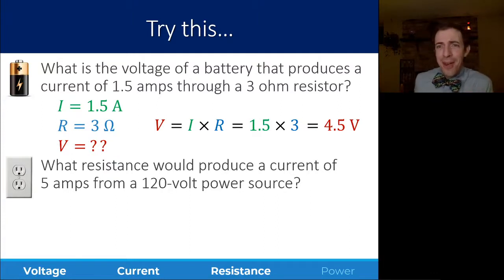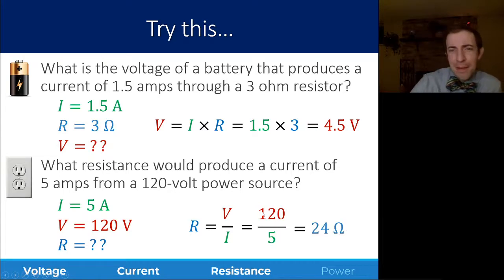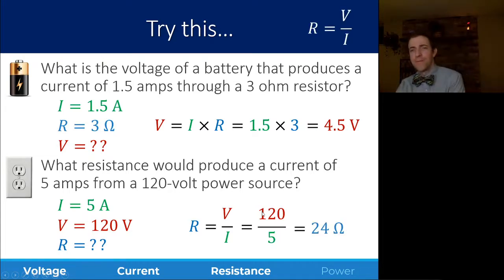With that in mind, go ahead and pause and solve for the unknown here. What resistance would produce a current of 5 amps from a 120 volt power source? All right, looking at the properties that we have, 5 amps is the current, that's I. 120 volts is the voltage. And then R is just voltage divided by current, which is 120 divided by 5, or 24 ohms.